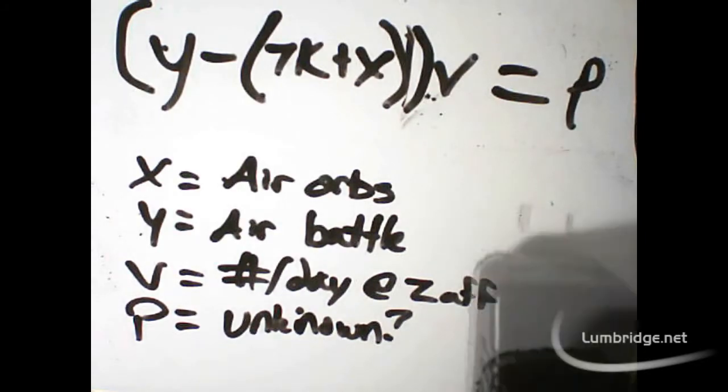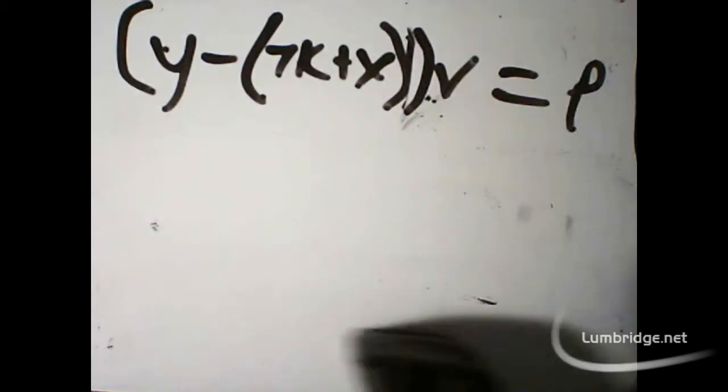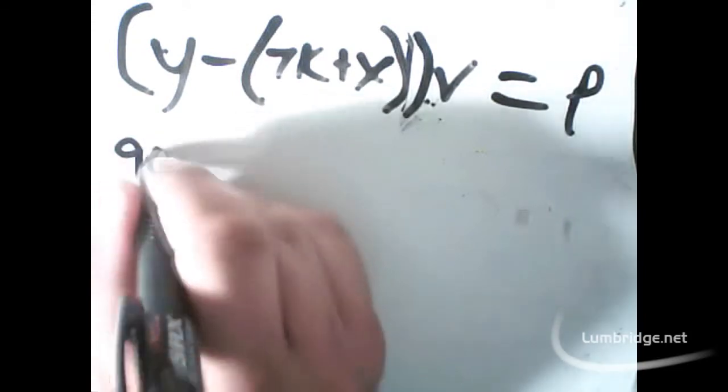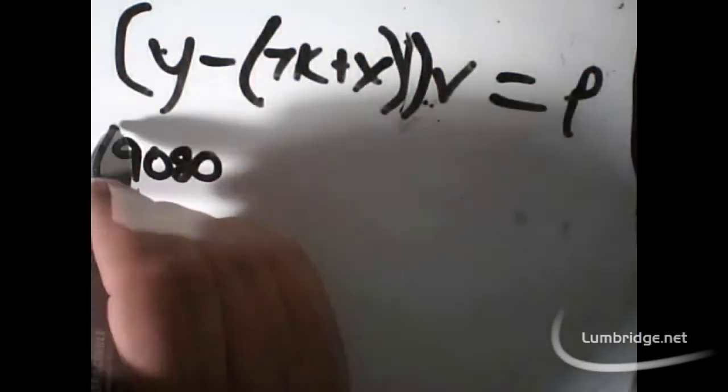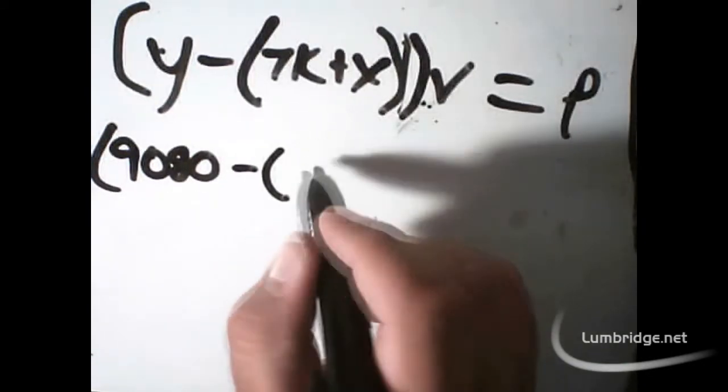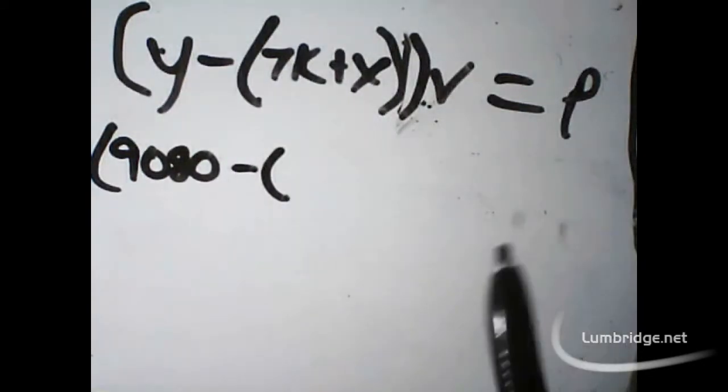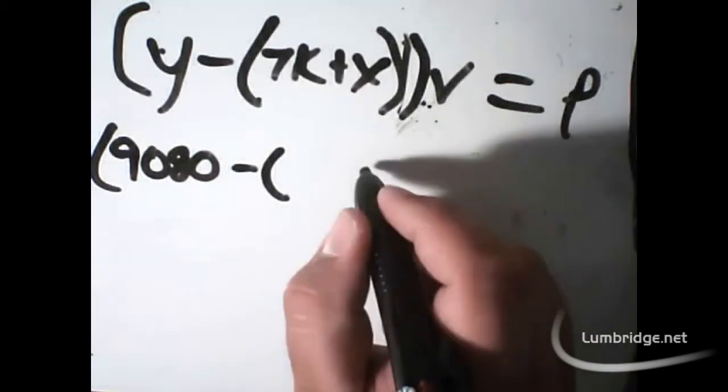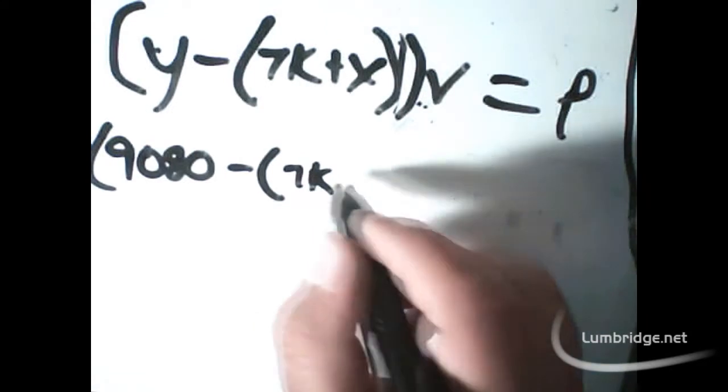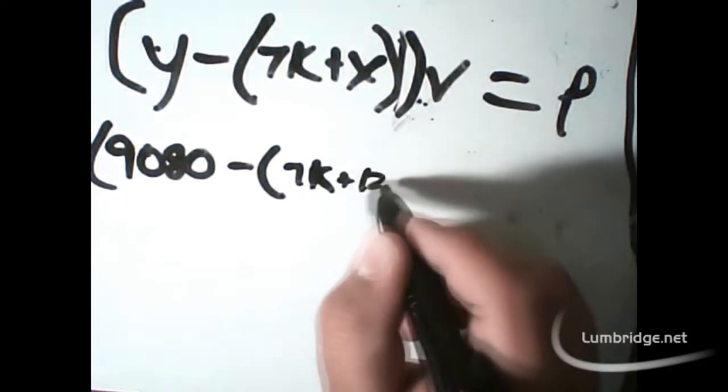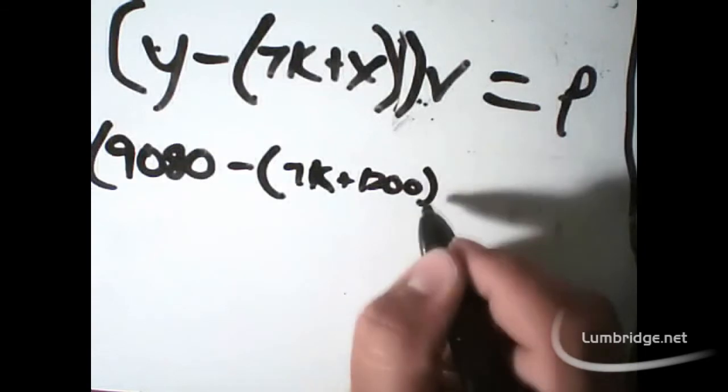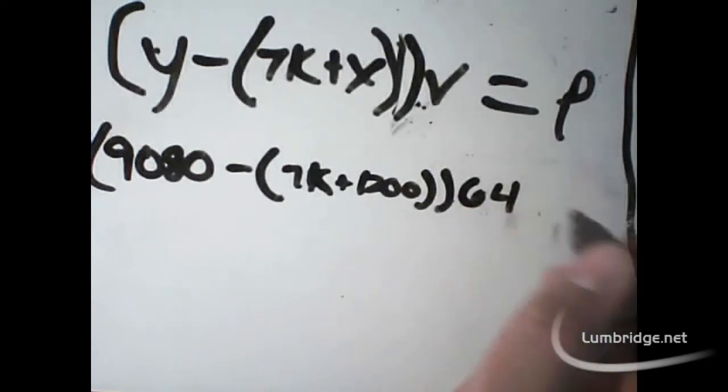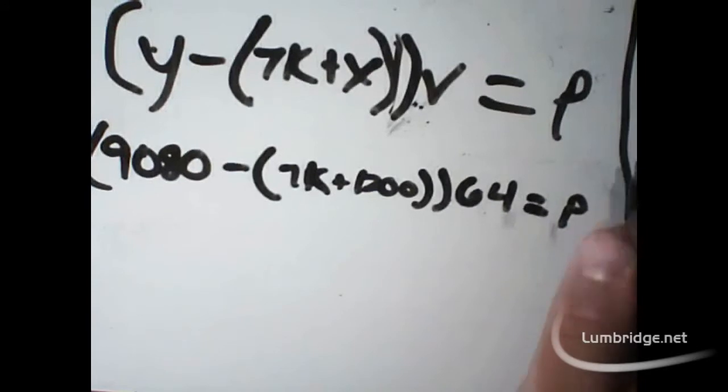So, now that we've defined our variables, let's solve the equation and plug in what we know. Well, for this example, we're going to say that Y, the price of air battle staffs, is 9,080 gold, which is about right, minus parentheses. And the parentheses, if you haven't studied algebra yet, just denotes that this is an equation in its own. That you want to solve this portion before you move on to the next. Which means, we want to solve 7,000 plus, we'll say the air orbs cost us 1,200 gold. Not too far fetched. Multiplied by V, which in our case is going to be 64. Because that's how many I can get in a day. Equals P, our unknown.